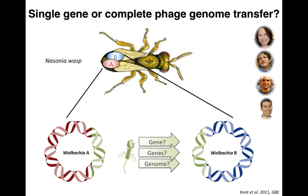Now that we've observed gene transfer of this phage element between co-infections, the next question is: are single phage genes moving through recombination, or are whole phage genomes transferring from one cell to another? We did this work with Bethany Kent and Antonis Rokas and colleagues at Vanderbilt. If we sequence the entire genome of A and B Wolbachia strains and ask whether they share a prophage region, we can test whether there's been a whole genome transfer of the phage between these two different Wolbachia strains.